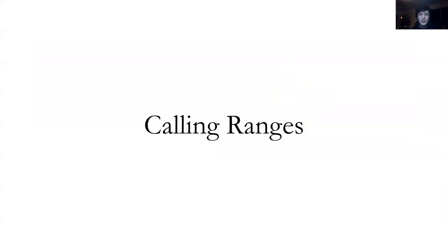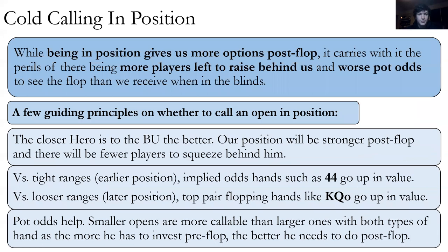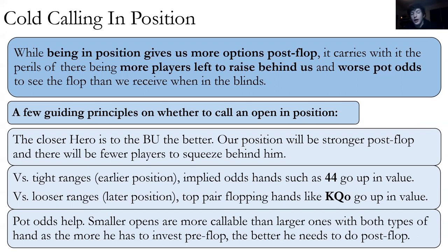Now we can actually start talking about calling ranges. We've covered all the reasons to call and the gap concept — we want to call fewer hands than we open-raise. A few guiding principles: closer to the button, we call more hands because position is stronger and there are fewer people behind that can squeeze us. Squeezing is when we call a raise and someone else re-raises over the top — since we admitted we don't have that strong a hand, it's them giving us the middle finger and telling us to fold. It's very annoying. Versus tight ranges we like implied odds hands; versus looser ranges we like hands with good pair potential.